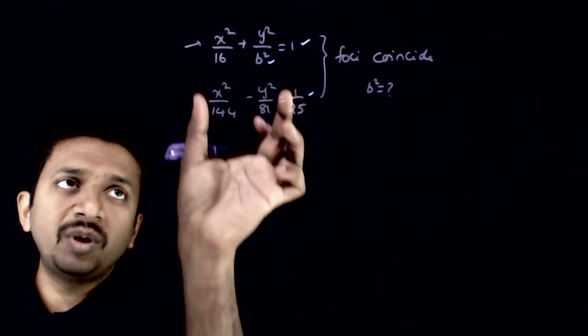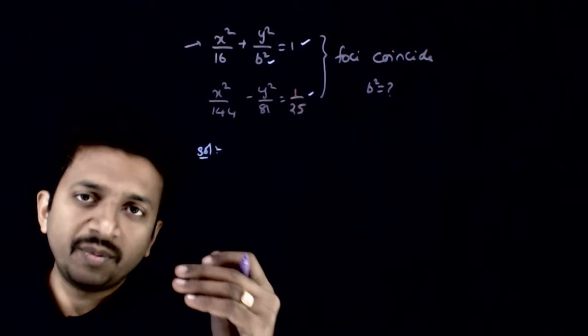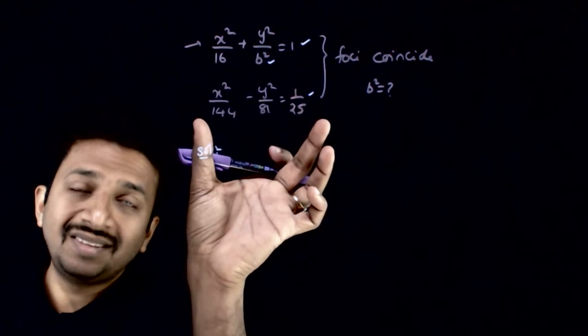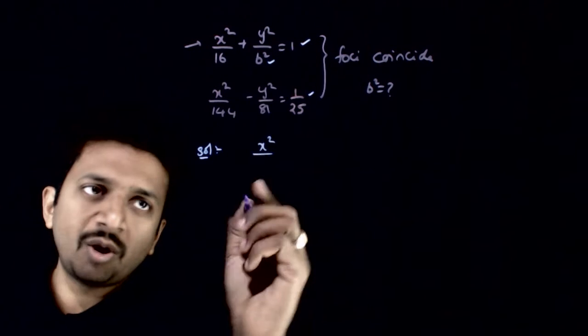The focus of this hyperbola and this ellipse are the same. Let me convert this information into equations. First, let me find the foci of this hyperbola. This becomes x² by—this 25 comes into the denominator.